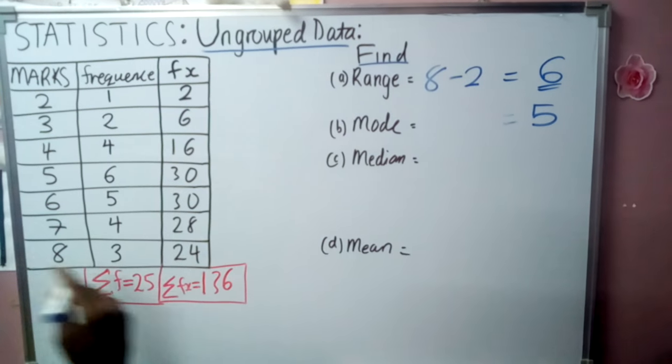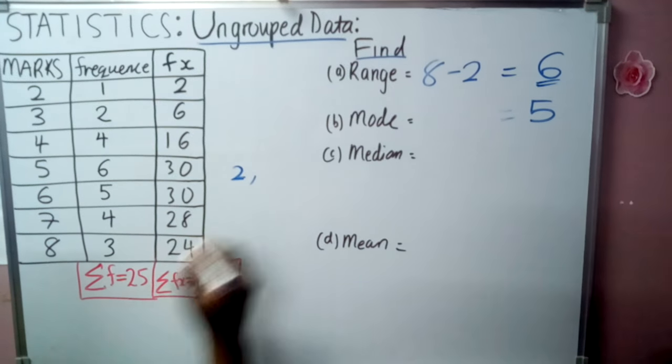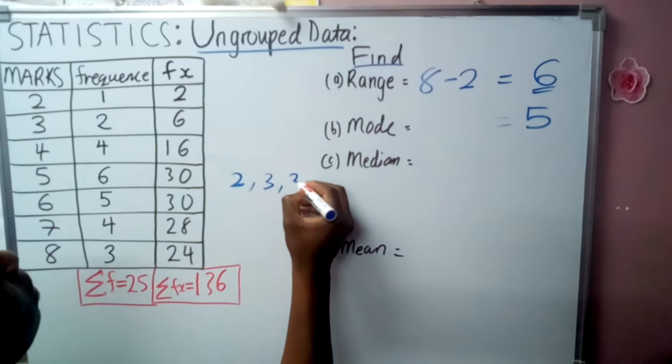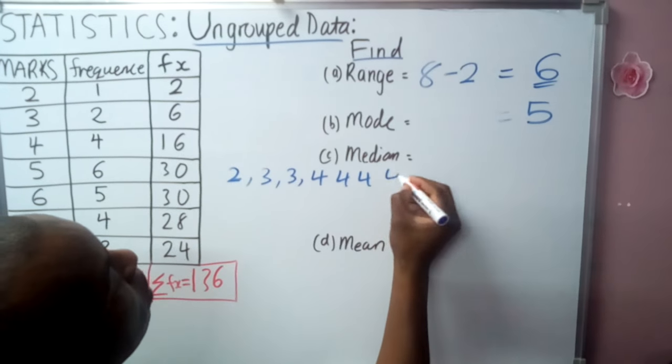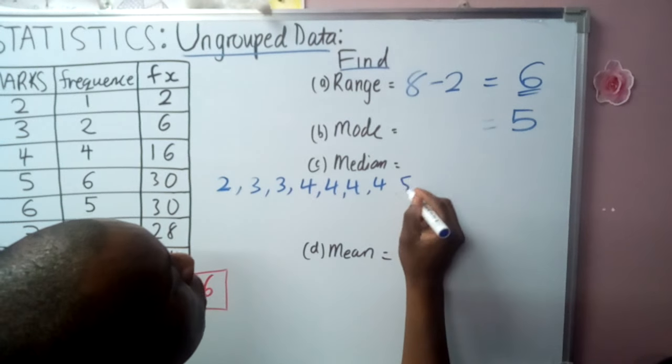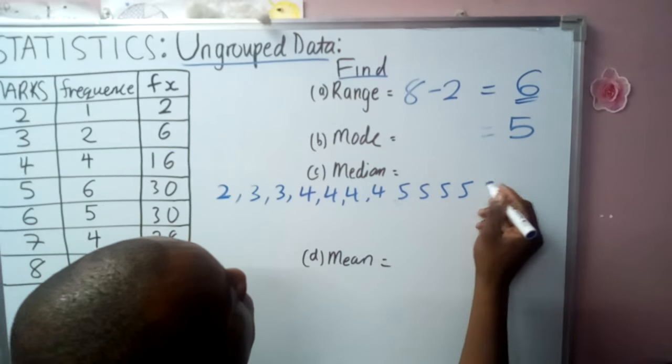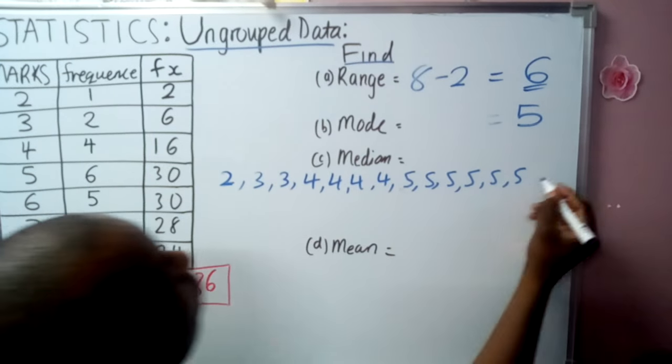2 is repeating 1 time. 3 is repeating 2 times. 4 is repeating 4 times. 5 is repeating 6 times. 6 is repeating 5 times.